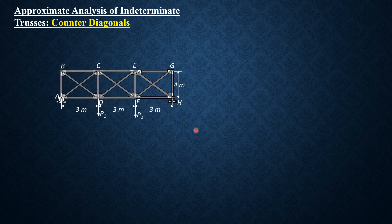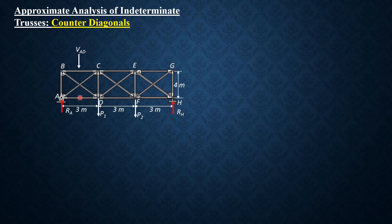There are two assumptions in the analysis. Assuming this is the truss system, first you have to determine the reactions, then determine the panel shear in each panel. The shear in panel AD is VAD and it is downward. The value of this shear must be equal to RA by cutting this panel and summing forces vertically.